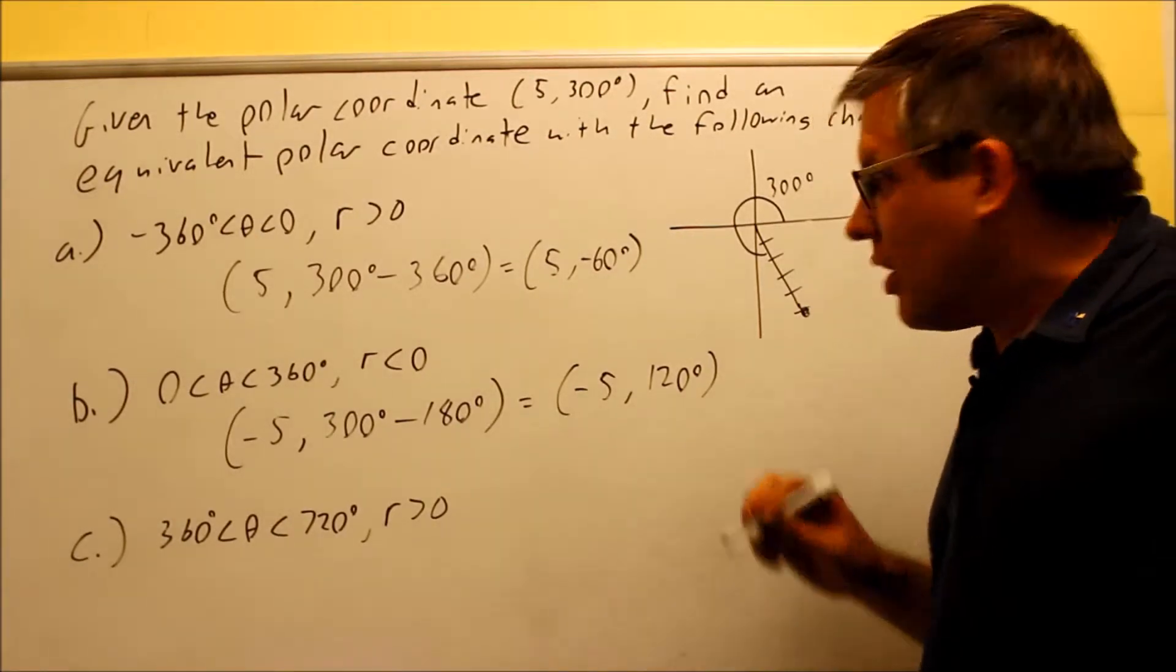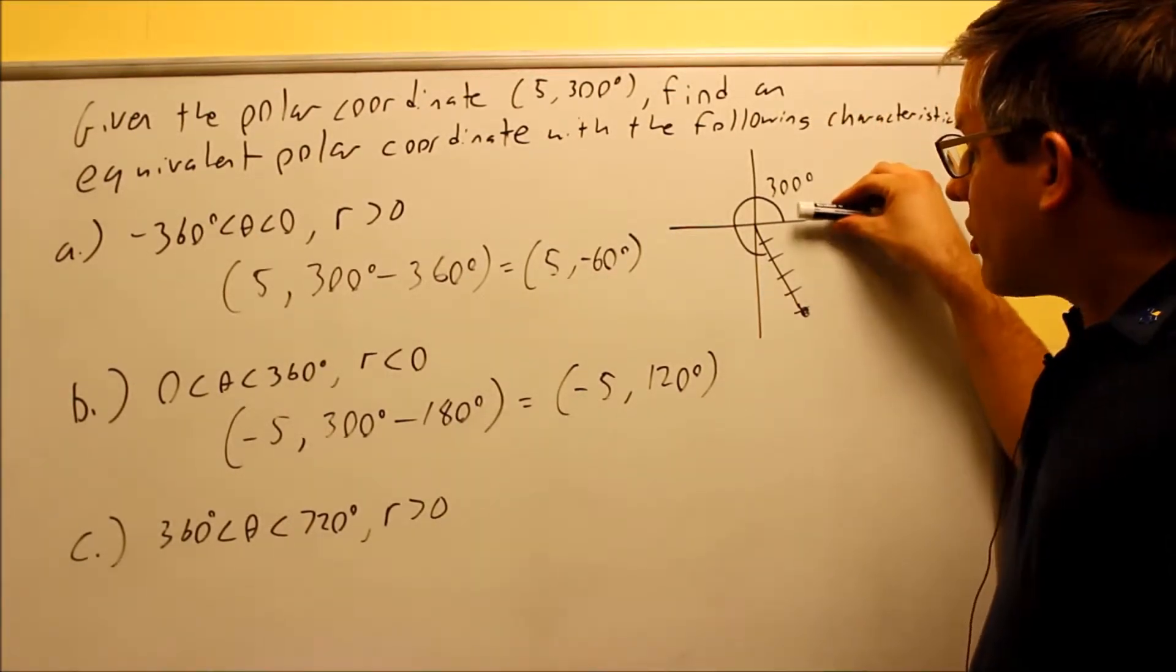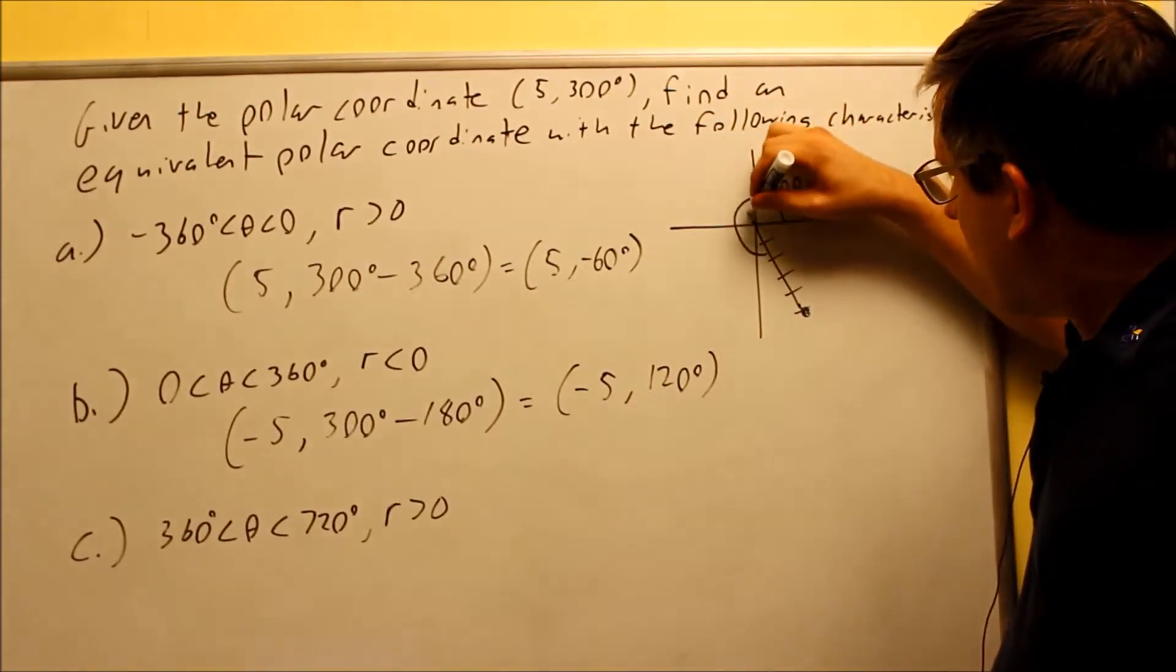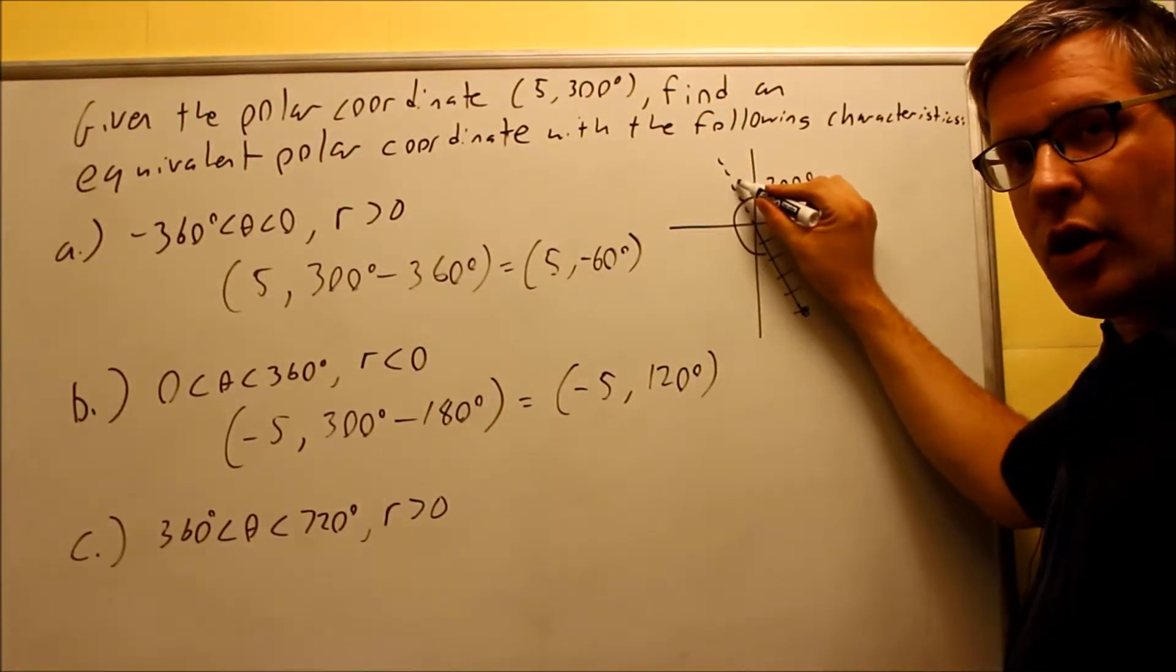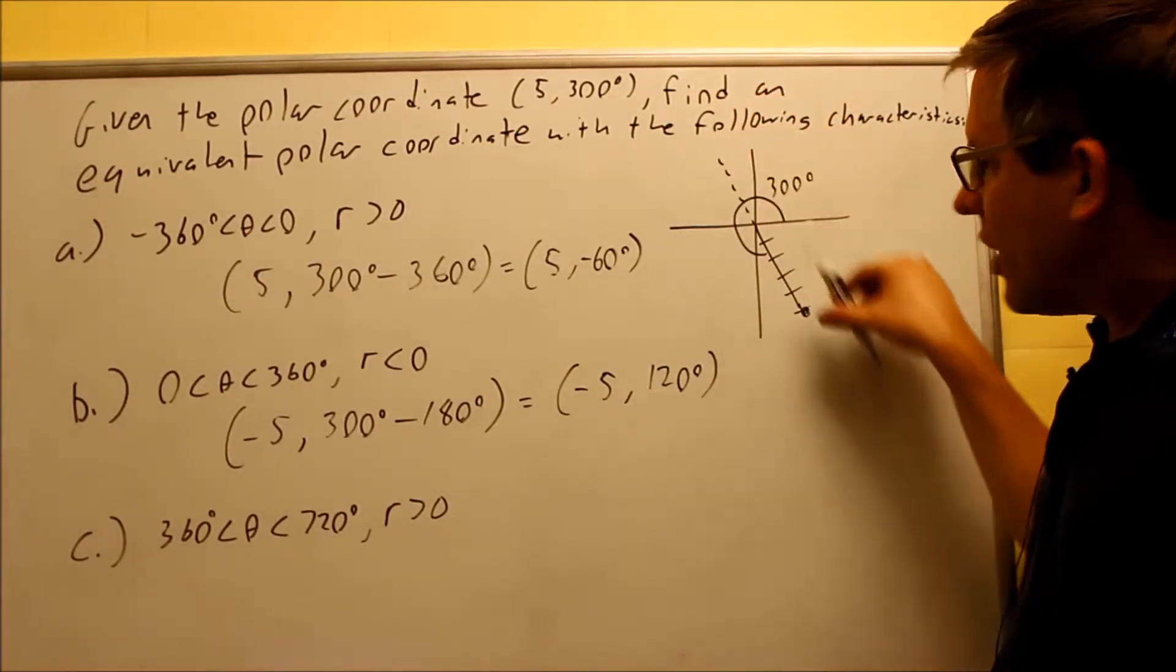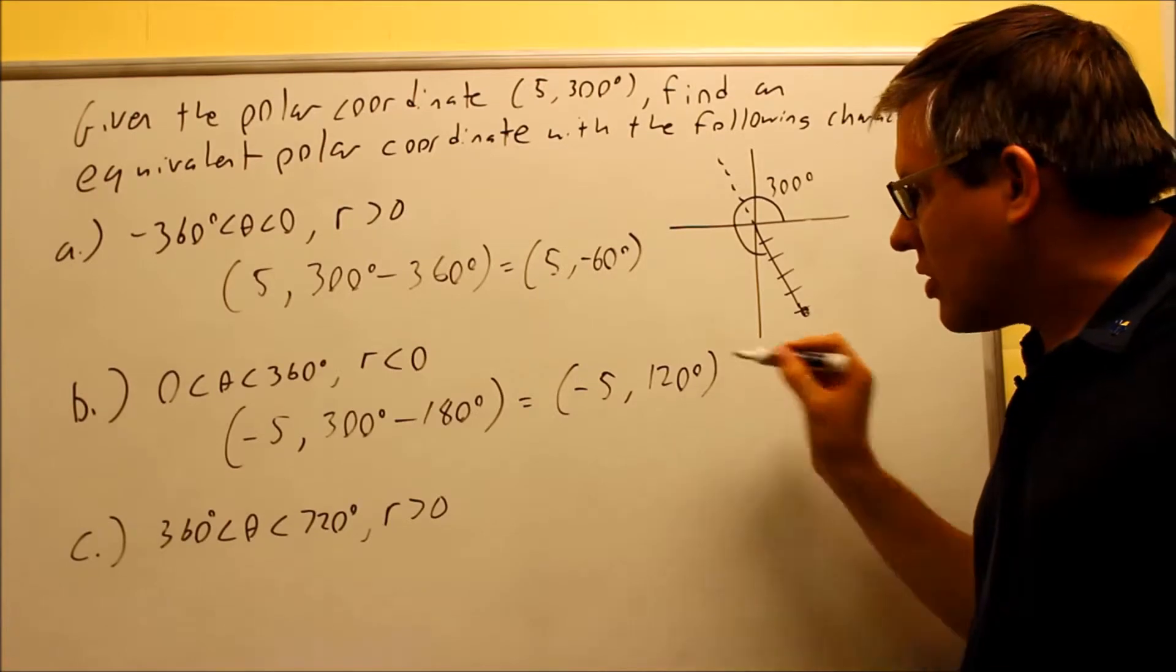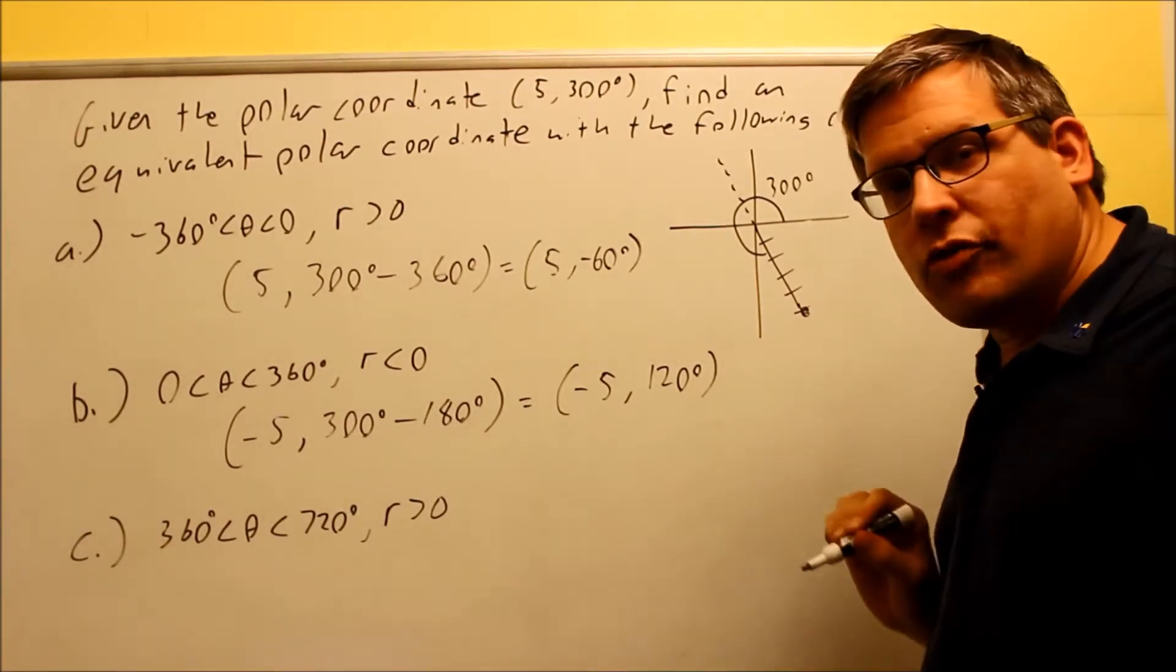Let's see if that one makes sense. So here, I would start by going to 120, but because I have a negative r, I would make that a dotted line. So I'd go this way, 120, reverse it 180 degrees in the other direction, and again, we still arrive at the same spot. So that means this is also correct. This is also an equivalent point.